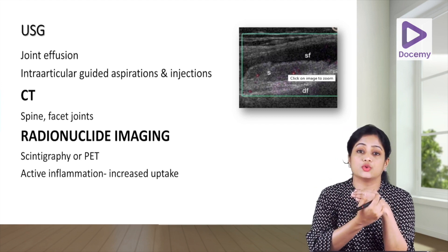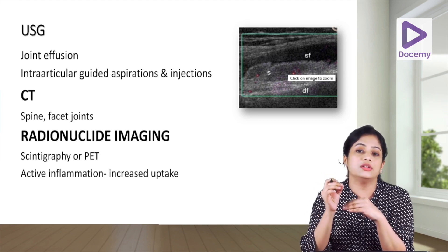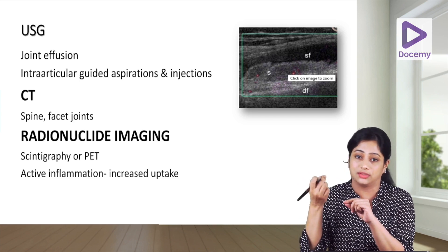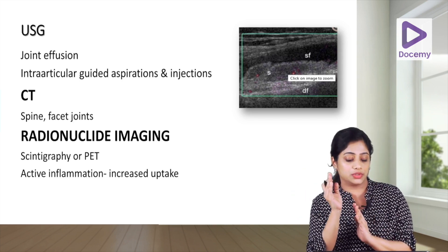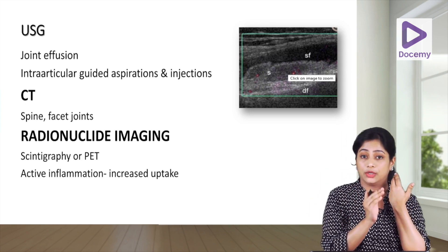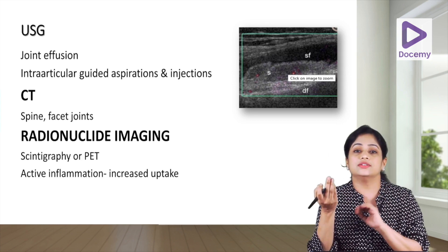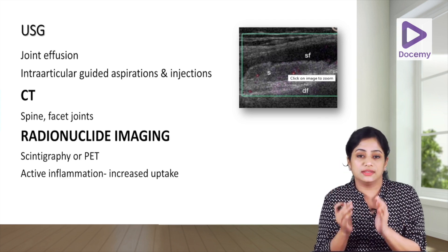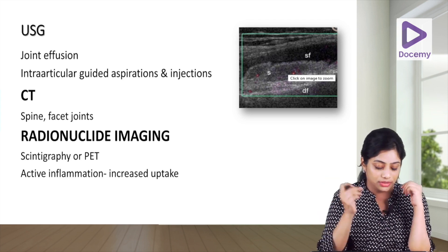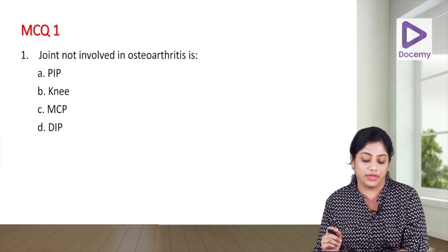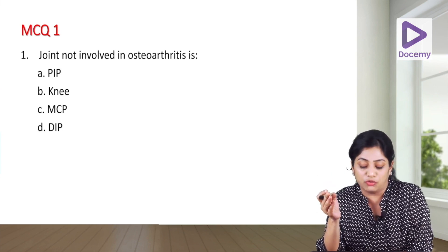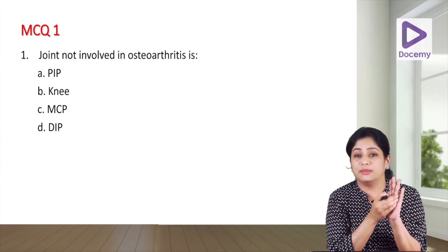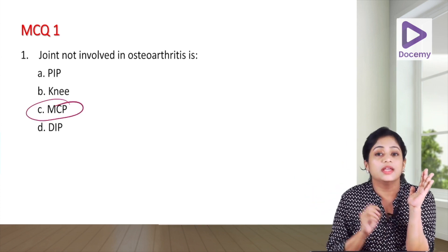Other imaging modalities useful in OA include USG, particularly for peripheral superficial joints to look for joint effusion, and for guided intra-articular injections and aspirations. CT is of particular use for OA affecting the spine, especially the facet joints. Radionuclide imaging — bone scintigraphy or PET imaging — shows increased uptake in actively inflamed joints. The MCP joint is the least commonly involved in OA.